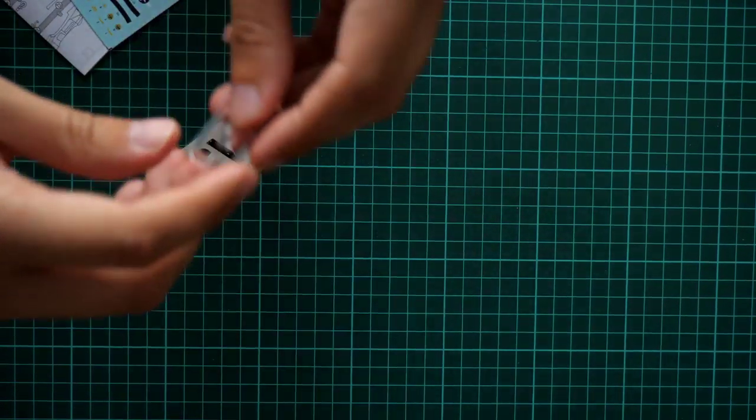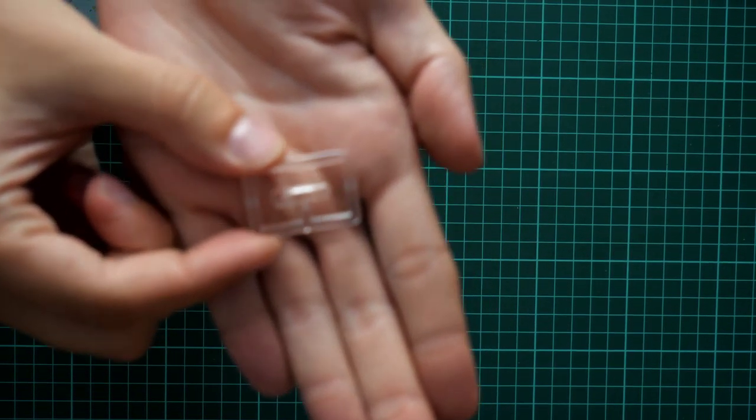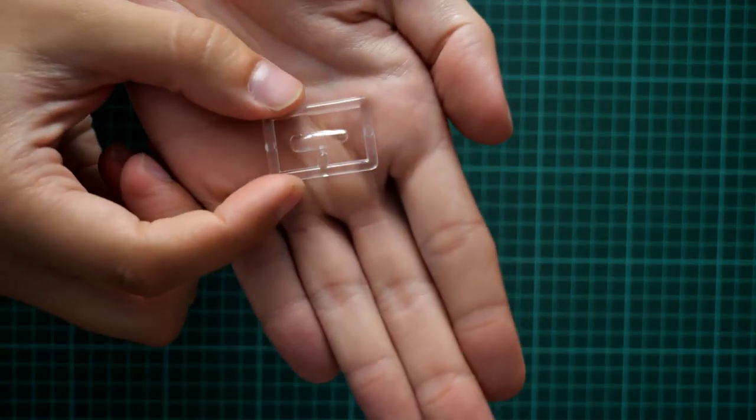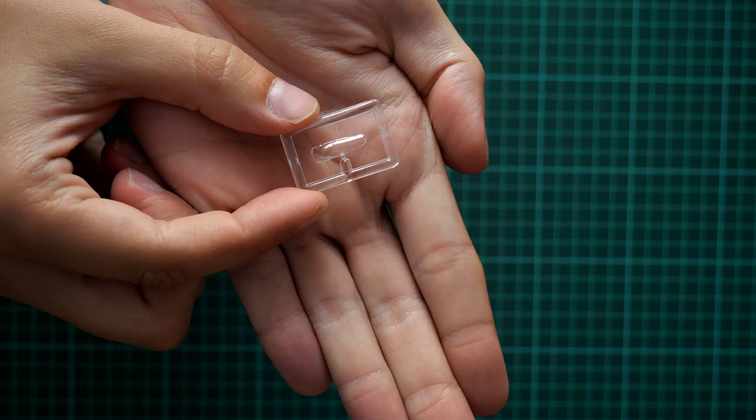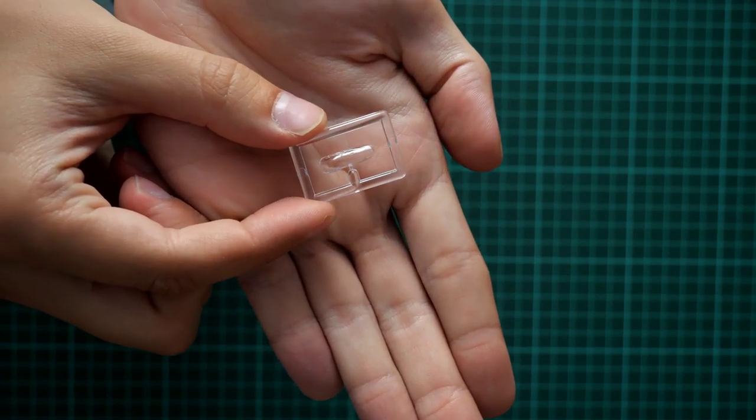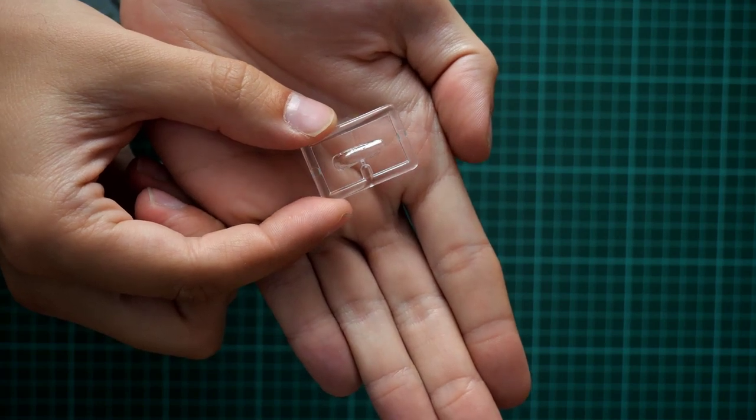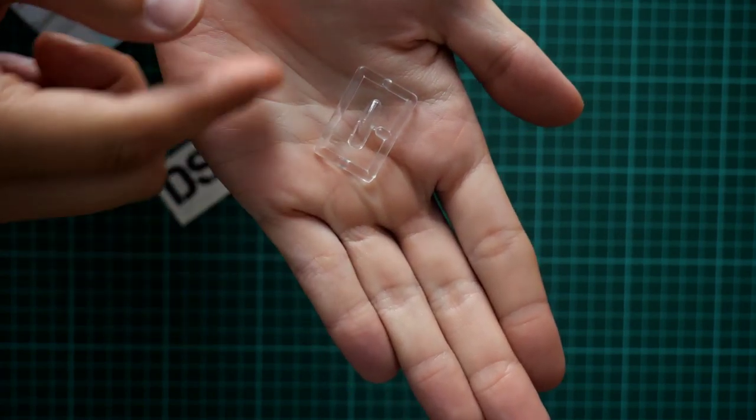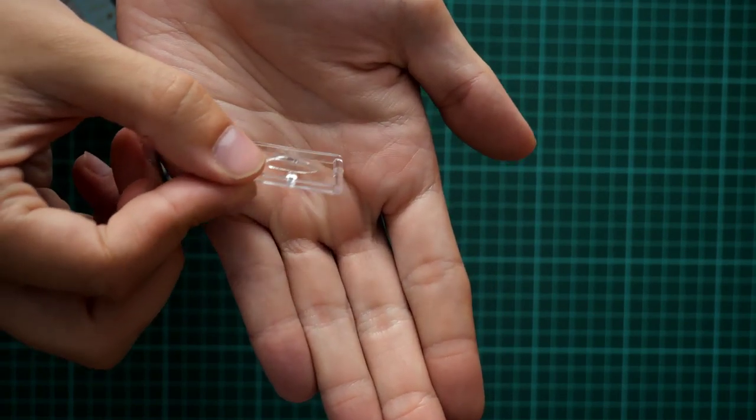Next we have one and only clear plastic sprue. Again, I will wait for camera to focus because it doesn't want to focus. Now we should be able to see it. So we have one-piece canopy, and I mean you can't do anything here. You have one piece part you will have to install it. Molding quality looks really good, but there are no masks included, so you have to deal with it with your own hands.